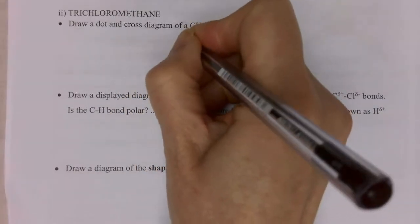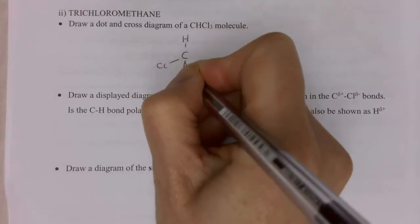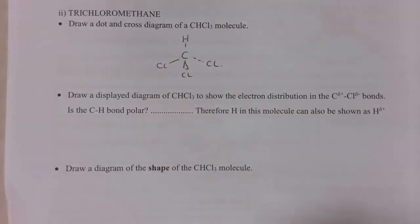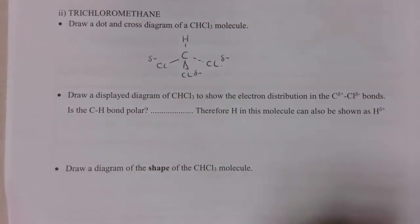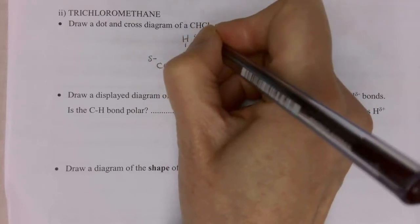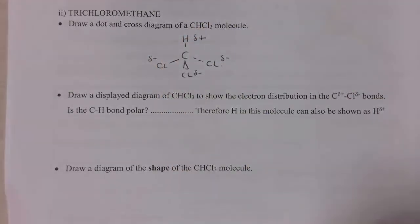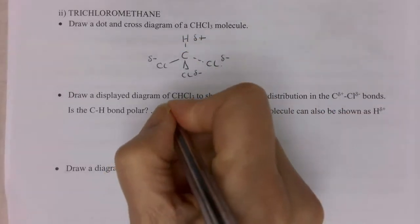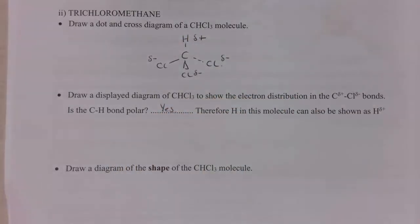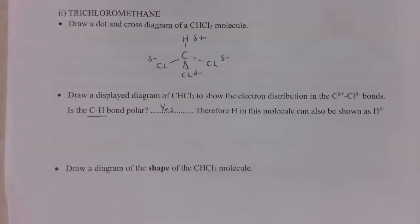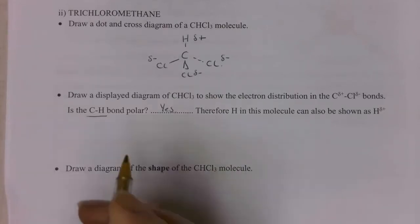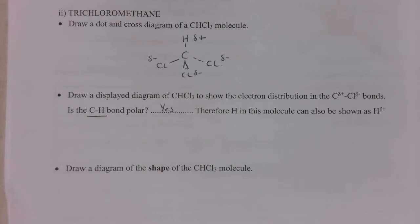Trichloromethane is another good example. We have three chlorine atoms and a carbon, with a hydrogen here. The chlorines are all very delta negative — they have a high electronegativity value — and the hydrogen ends up as delta positive. The hydrogen-carbon bond is polar but there is such a small electronegativity difference between them that we usually classify the C-H bond as non-polar. Do remember anything which is not identical will always be slightly polar, but for most cases the polarity of this bond is so small it can generally be ignored.